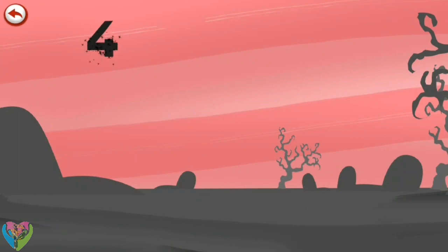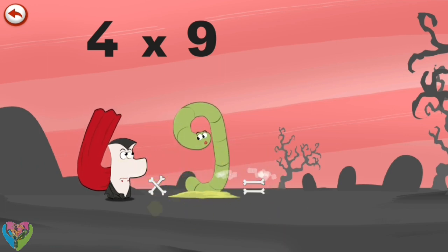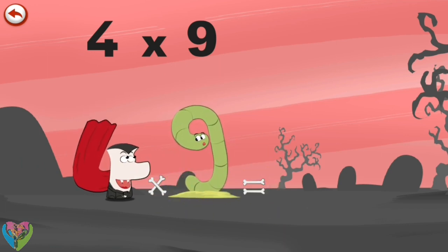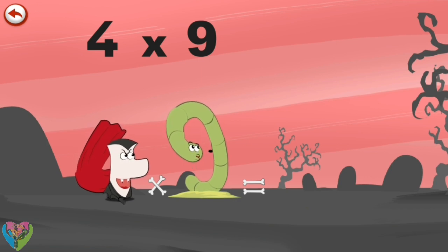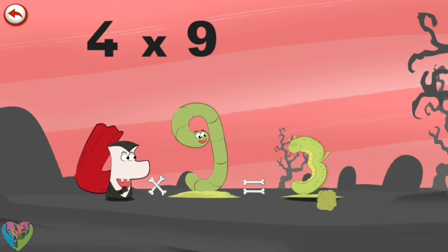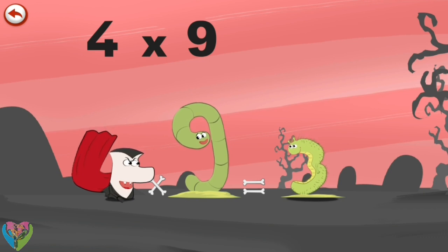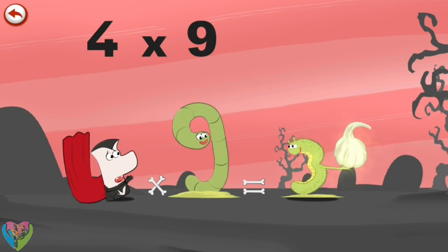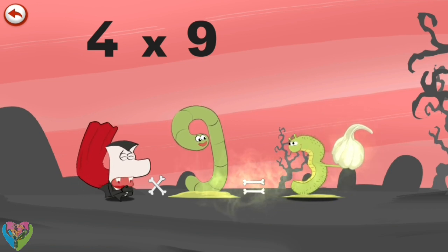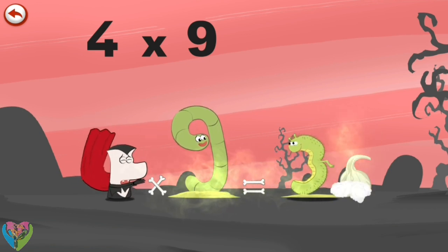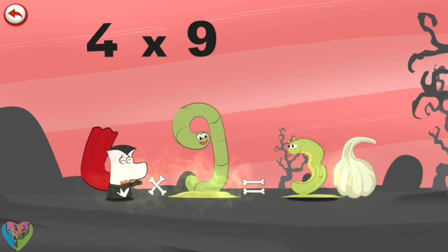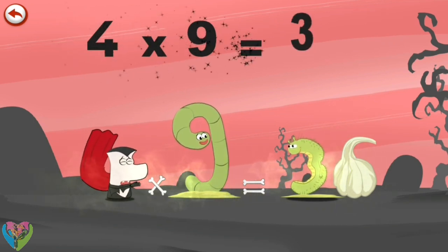What's the story of 4 times 9? When Vamp 4 sees Slimy 9, he really wants to bite him, but Slimy 9 whistles to get the help of his friend the caterpillar. The caterpillar, which is in the shape of a 3, pulls out a clove of garlic in the shape of a 6. Oh no, garlic! Like all vampires, Vamp 4 hates garlic. 4 times 9 is 36.